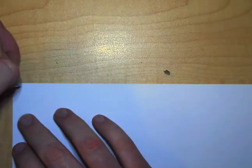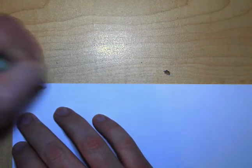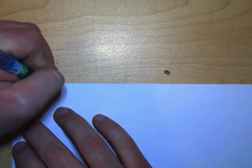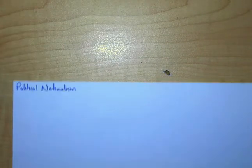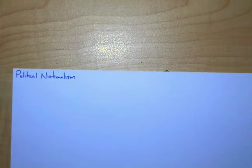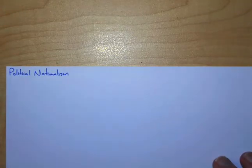In this video we're going to look at another couple of examples of political nationalism. We're going to look at the creation of Belgium and the very first attempt to unify Germany.